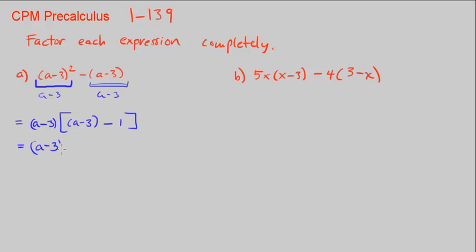So now let's just simplify this. We have (a-3) outside here. And (a-3) minus 1, well, we can combine the 3 and the 1, the negative 3 and the negative 1, to be a minus 4.